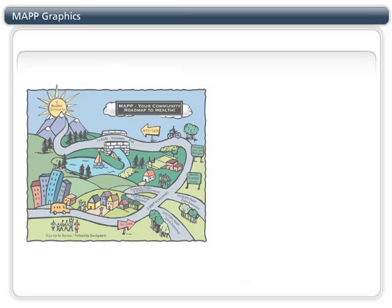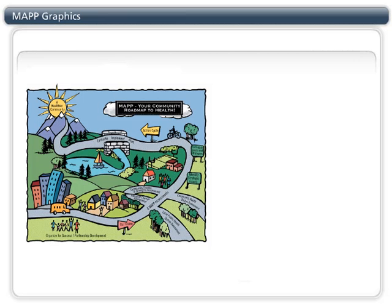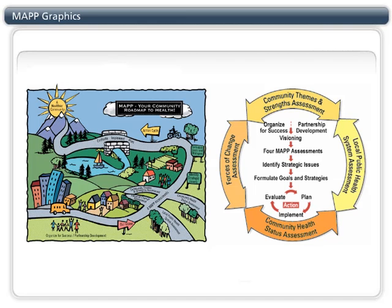There are two graphics used to depict the MAP process. The roadmap graphic may be a bit friendlier and a familiar metaphor for people in the broader community. The AERO model, on the other hand, may be more appealing to those in the public health community because they probably have more understanding of the importance of assessments. The AERO model lists the MAP steps down the center and is surrounded by the four assessments. The outcome of the four assessments drives all of the work in the process, inside the circle.